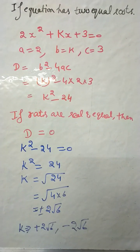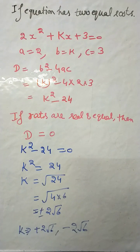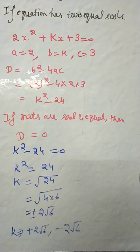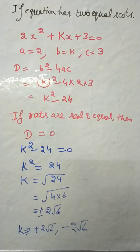Because when we solve the under root, the answer is in the form of plus and minus. +2√6, -2√6. These are the values of k.